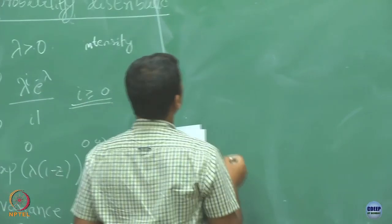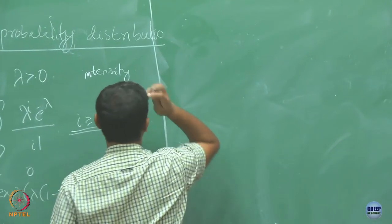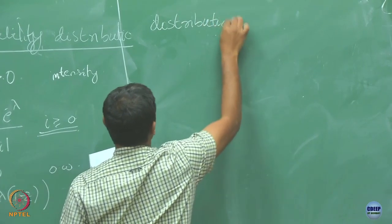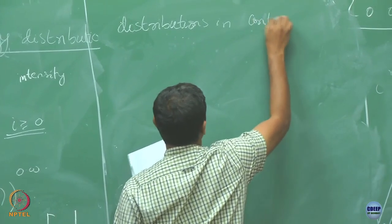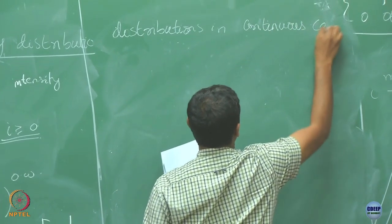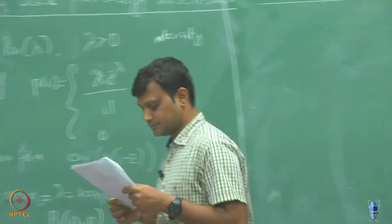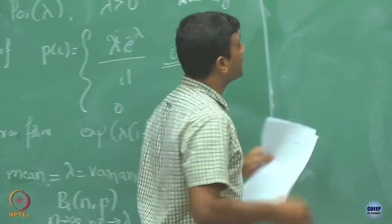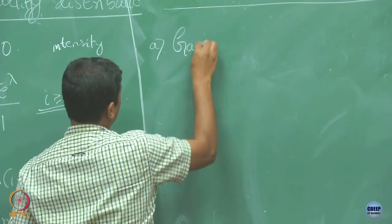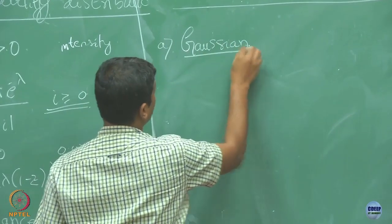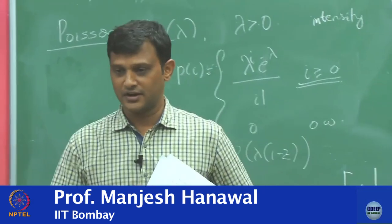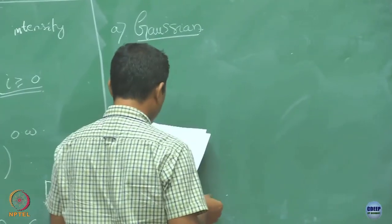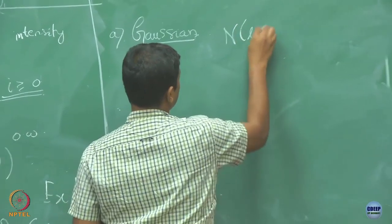Next we are going to look into something called Gaussian random variable, which many of you have already heard about many times. Let us formally define the Gaussian distribution. We are going to denote it with the symbol indicating its parameters.